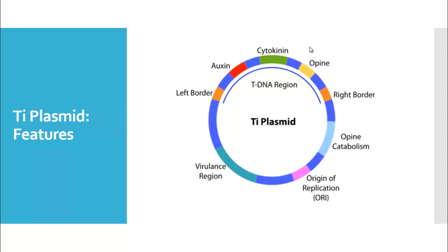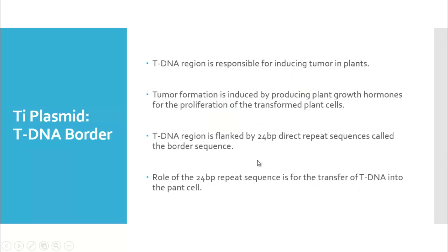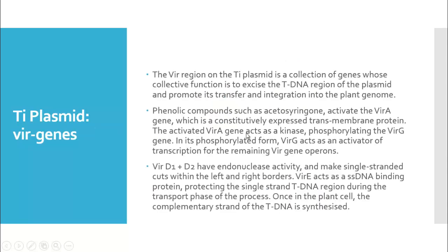You can see here the left and right border sequences — these are the 24 base pair repeat sequences involved in transferring the T-DNA into the plant cell. The virulence region contains vir genes that are responsible for excision and transport of the T-DNA region into the plant genome.